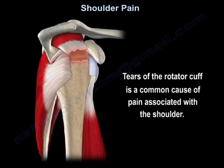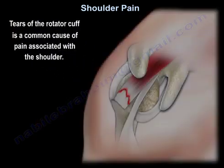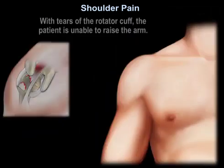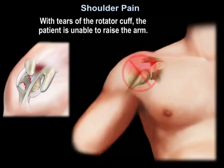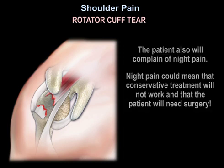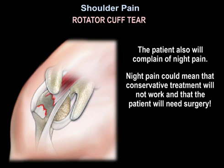Tears of the rotator cuff are a common cause of pain associated with the shoulder. Most tears occur in the supraspinatus tendon and they can be either partial or complete, with complete tears of the tendon usually requiring surgery. With tears of the rotator cuff, the patient will be unable to raise the arm. The active range of motion of the shoulder will be lost, but the passive range of motion will be intact. The patient also will complain of night pain, which could mean conservative treatment will not work and that the patient will need surgery.